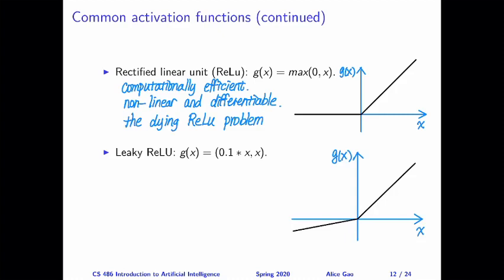Finally, we have the leaky ReLU, another version of the rectified linear unit. The main difference is that on the negative side, when x is negative, there is a line with a small positive slope instead of a completely horizontal line. Leaky ReLU has the same nice properties as the classic ReLU, but it fixes the dying ReLU problem in the negative area — even when x is negative, the derivative is not zero, so the network can keep learning for negative input values.